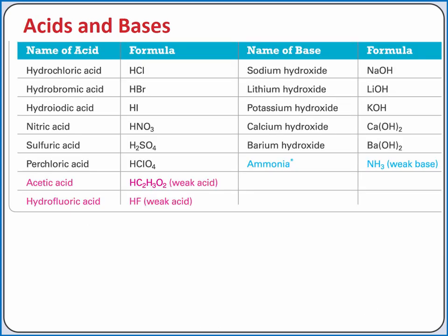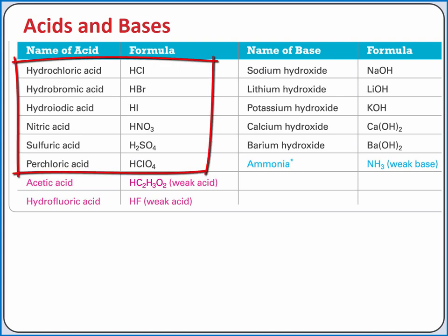This table contains common acids and bases. Six common strong acids to remember are hydrochloric acid, hydrobromic acid, hydroiodic acid, nitric acid, perchloric acid, and the first hydrogen atom of sulfuric acid.